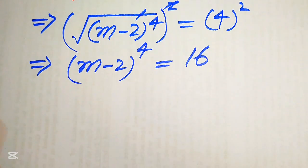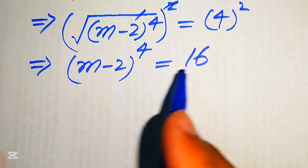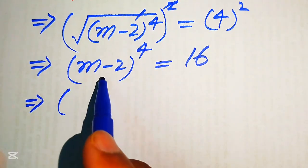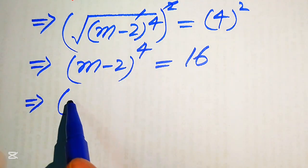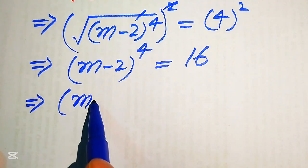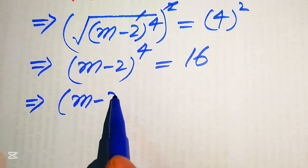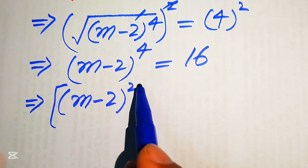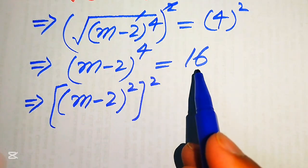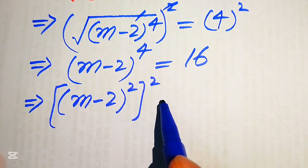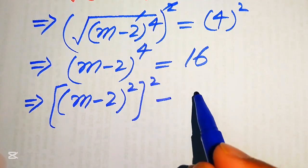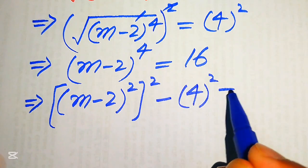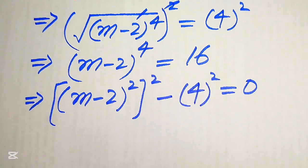In the next step, we move the 16 to the left hand side and rewrite (m minus 2) to the power of 4 as ((m minus 2) squared) whole squared, minus 4 squared equals 0.